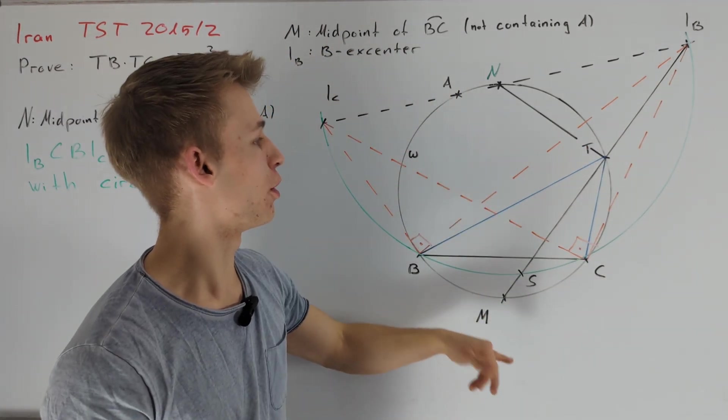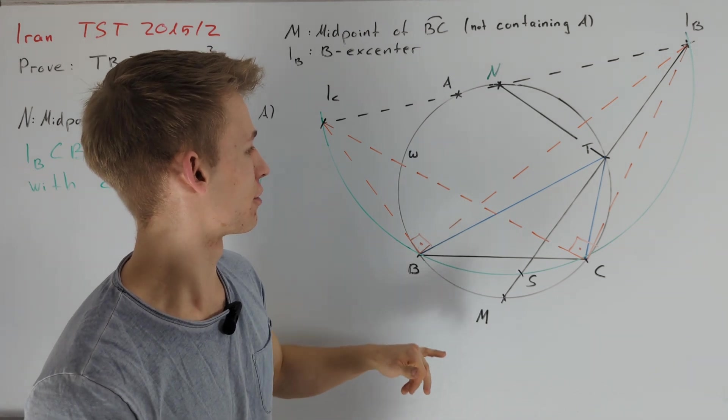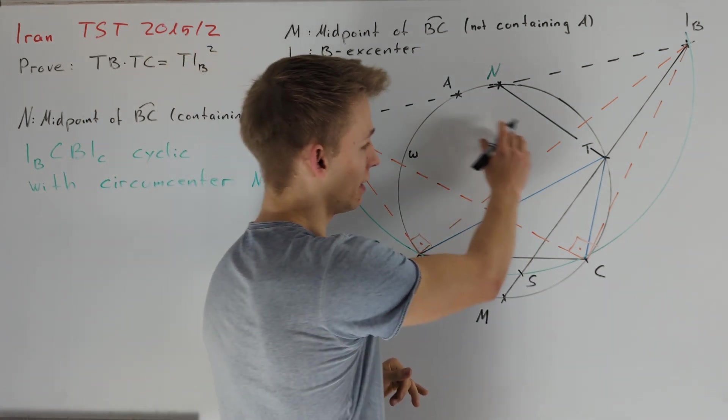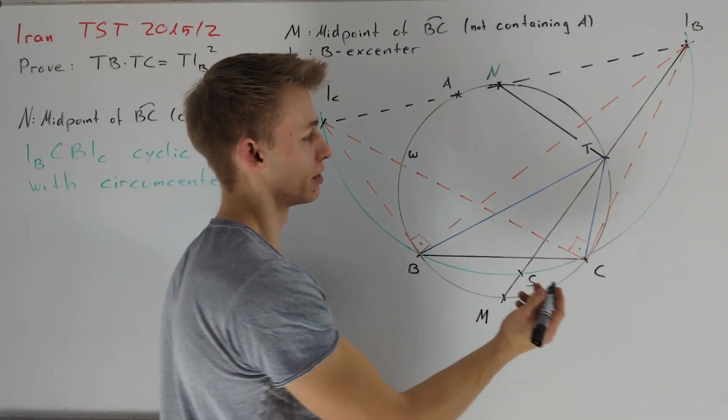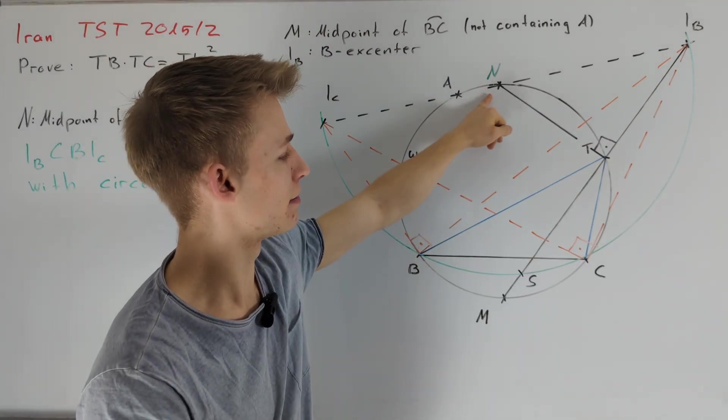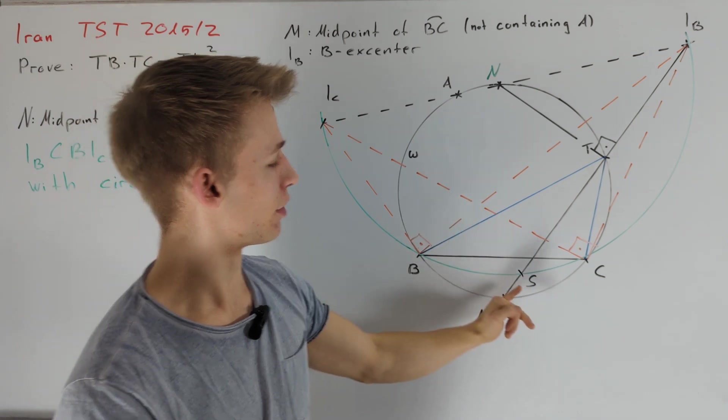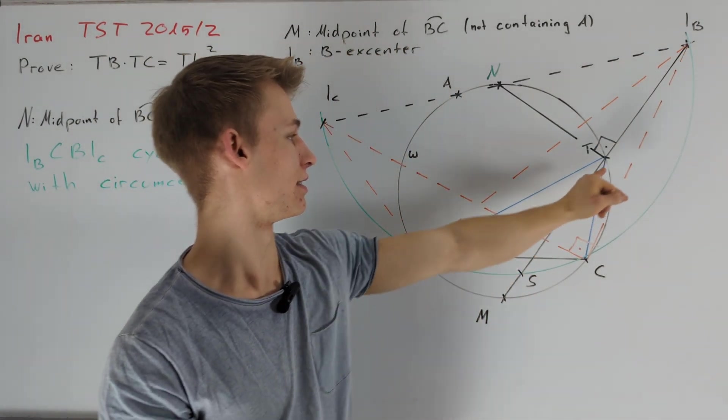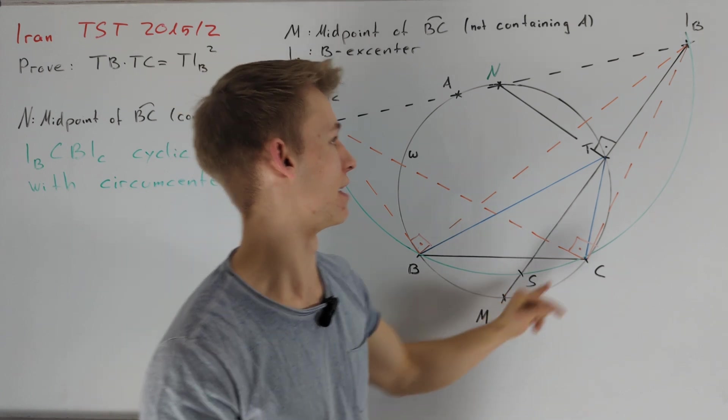Since N and M lie on opposite sides of the circumcircle of triangle ABC, we know that the angle NTM must be equal to 90 degrees. Together with the fact that N is the midpoint of a circle going through S and IB, this immediately implies that T is indeed the midpoint of SIB.